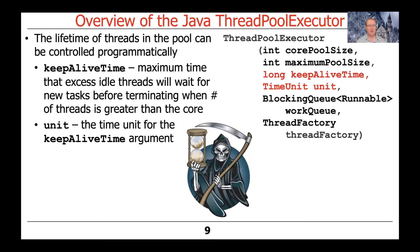Other parameters passed to the ThreadPoolExecutor constructor control the lifecycle of the threads: keep-alive time and time unit. The keep-alive time is the maximum time, in the specified time unit (such as milliseconds, microseconds, or seconds), that excessive idle threads will wait before being terminated. This applies when the number of threads is greater than the core pool size. So if maximum pool size is bigger than core pool size, and the keep-alive time is set to something other than zero, then after that time elapses with threads sitting idle, the ThreadPoolExecutor will terminate those excessive idle threads, bringing the count back down to the core pool size.